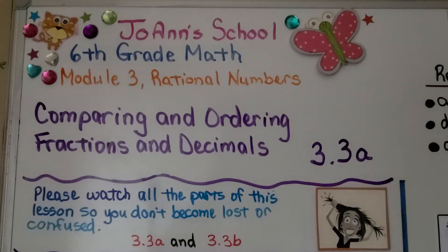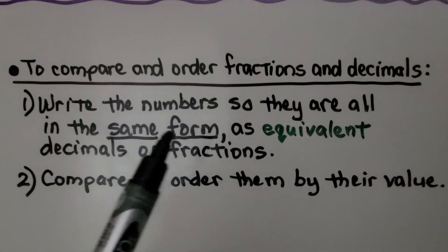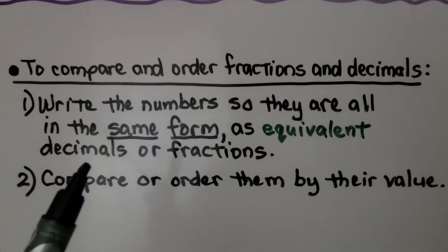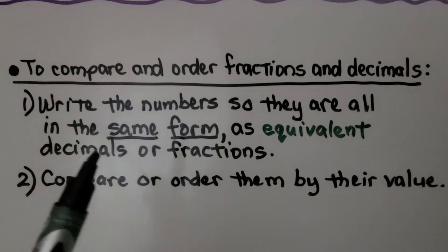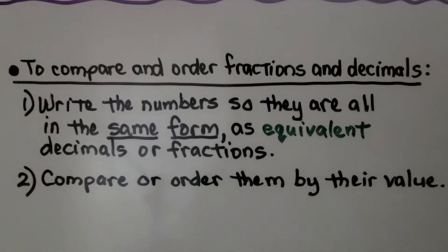This lesson is about comparing and ordering rational numbers and it's split into two parts. We're going to compare and order fractions and decimals first. To compare and order fractions and decimals, the first thing we do is write the numbers so they're all in the same form — as equivalent decimals or fractions. Then we compare or order them by using their value.